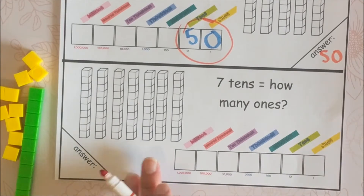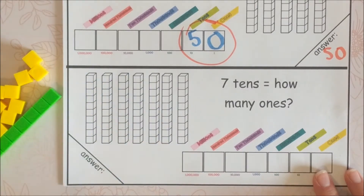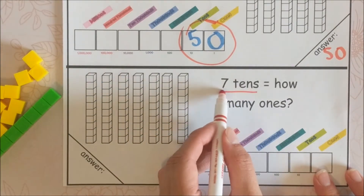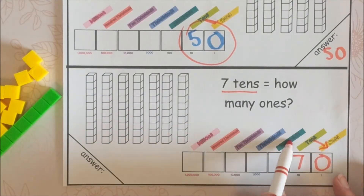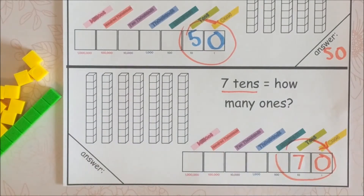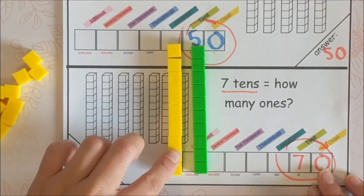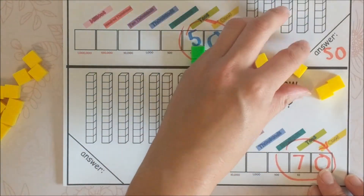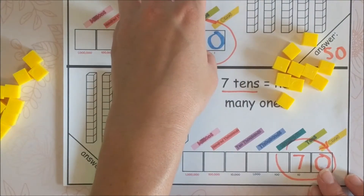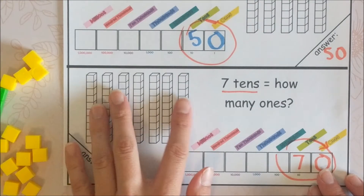Seven tens equals how many ones? I'm going to use the shortcut: seven tens — put a seven in the tens place, that's 70. How many ones is that? Go down to the ones place and circle. Here's why: if you have seven tens, there's 10 ones in each one of those. If you counted 10 ones seven times, you'd get 10, 10, 10, 10, 10, 10, 10 — seven times. Seven times 10 is 70. The reason we're using the shortcut is that once you get into bigger numbers, it helps a lot.